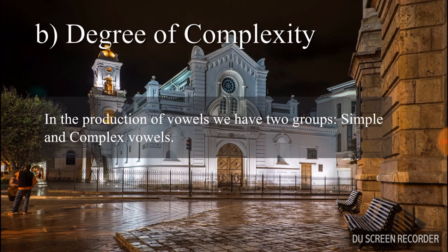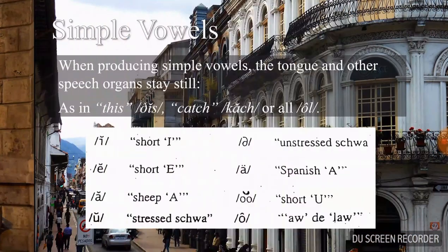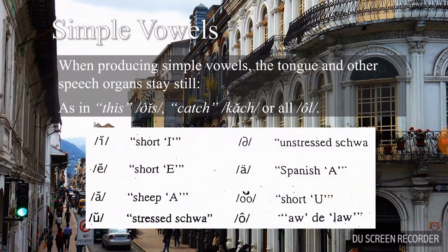Degree of complexity. In the production of vowels, we have two groups: simple and complex vowels. When producing simple vowels, the tongue and other speech organs remain in the same position, as in 'this', 'catch', or 'all'. The simple vowels are eight in number: short I, short E, short A, schwa, stressed schwa, Spanish A, short U, and open O.